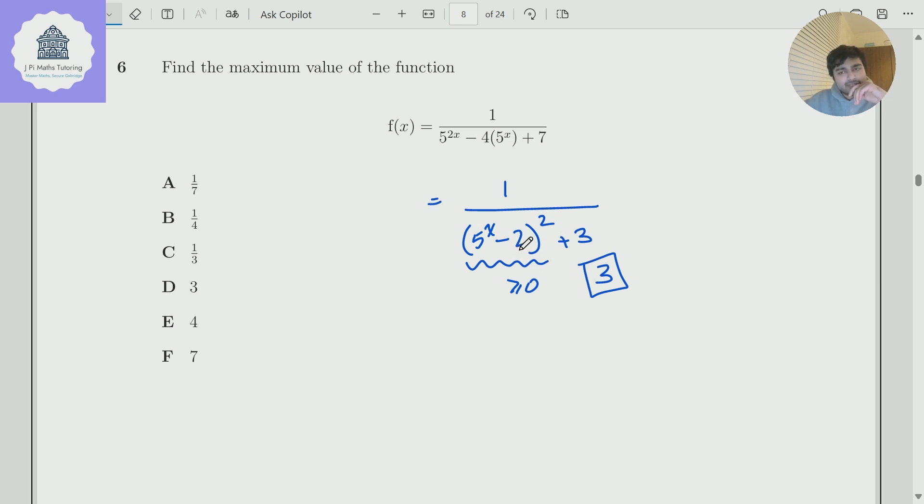But we just want to be a bit careful about this. Can this bracket here actually equal 0? And thankfully it can, because there is a real solution to 5 to the x equals 2. And so therefore the maximum value of this fraction is 1 over 3. So the answer is C.